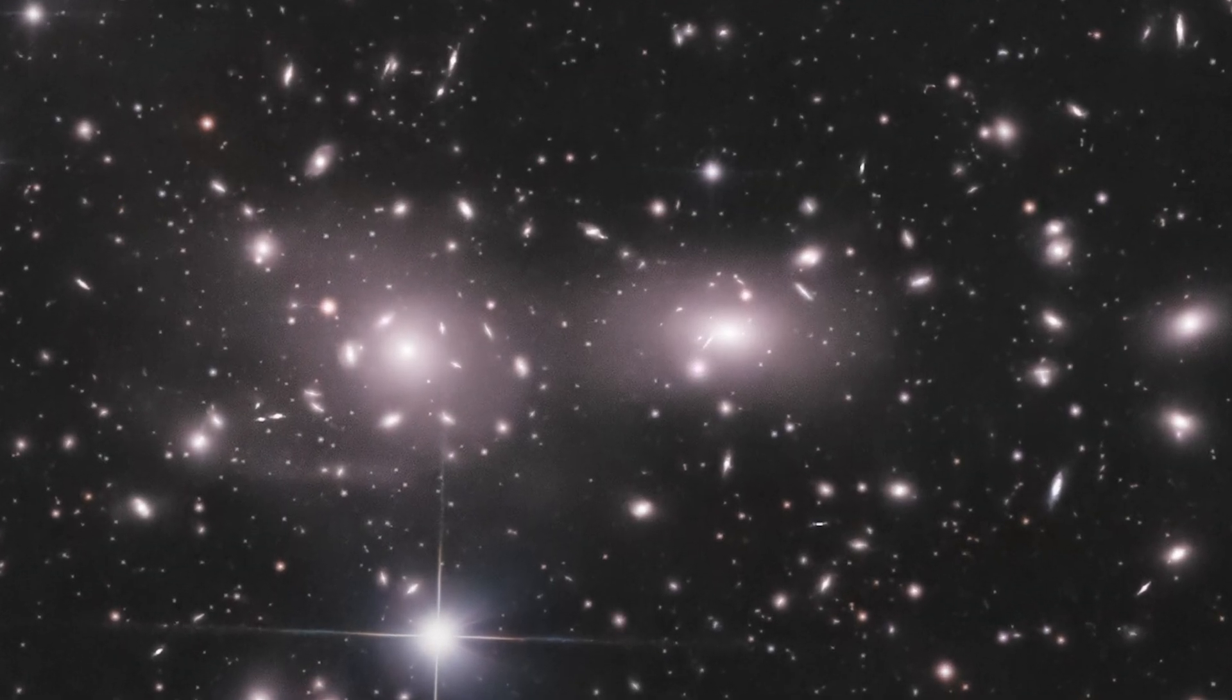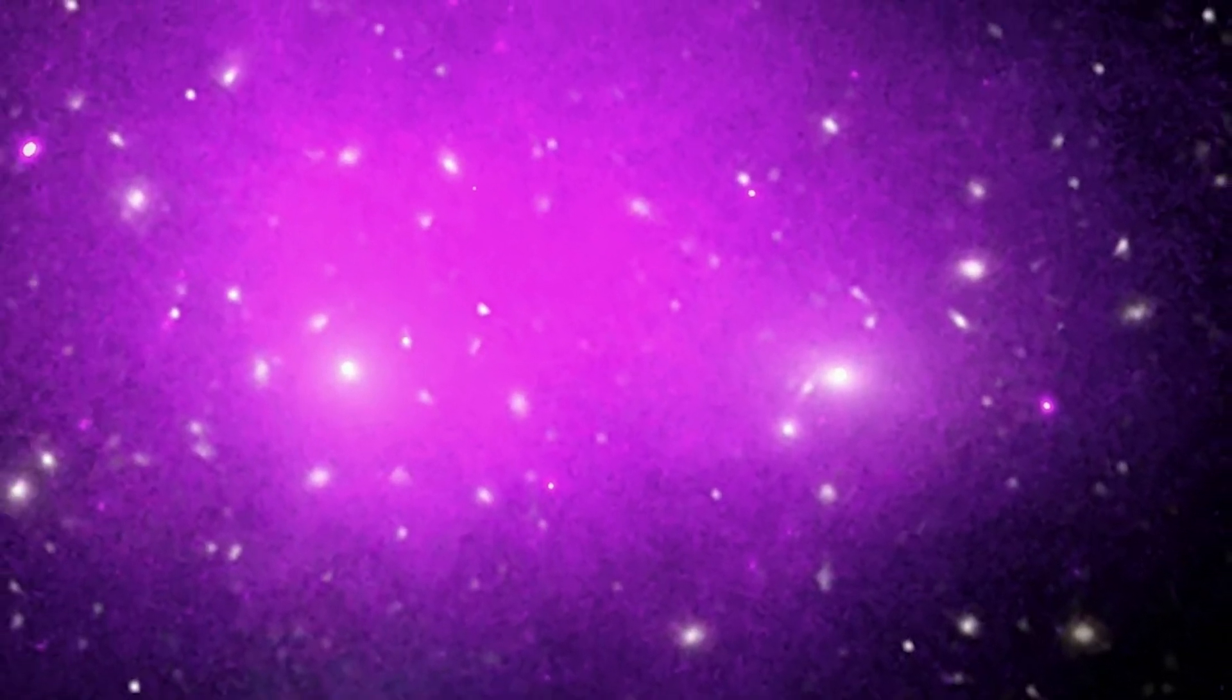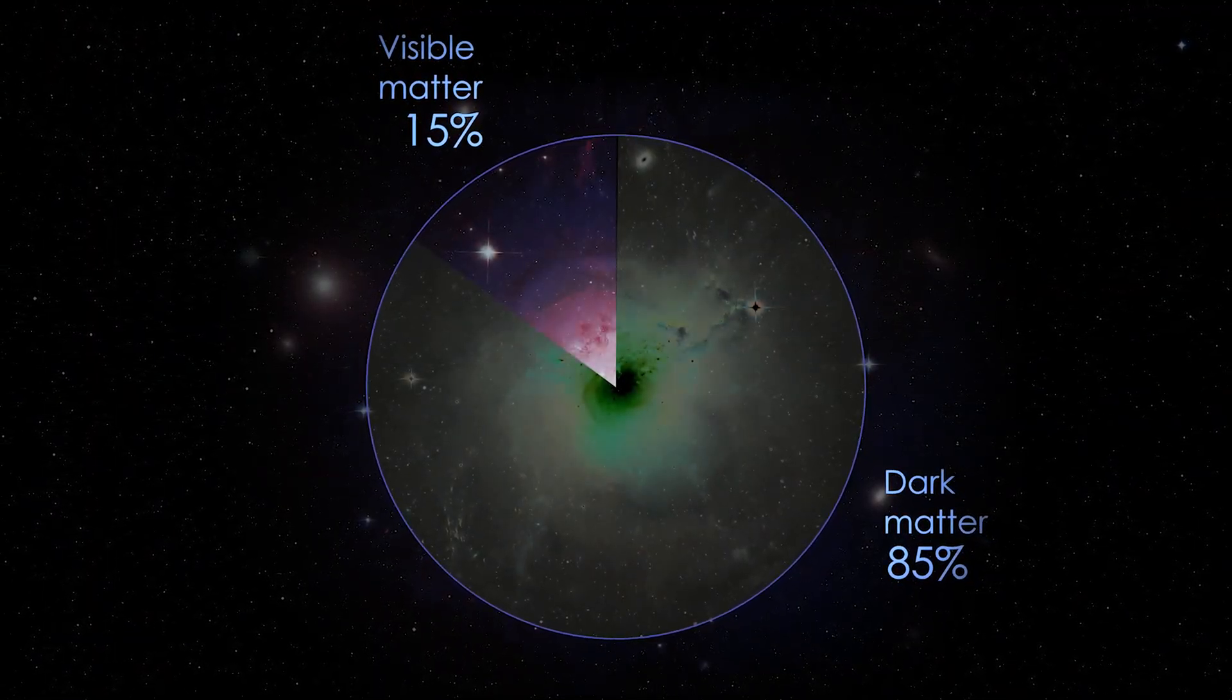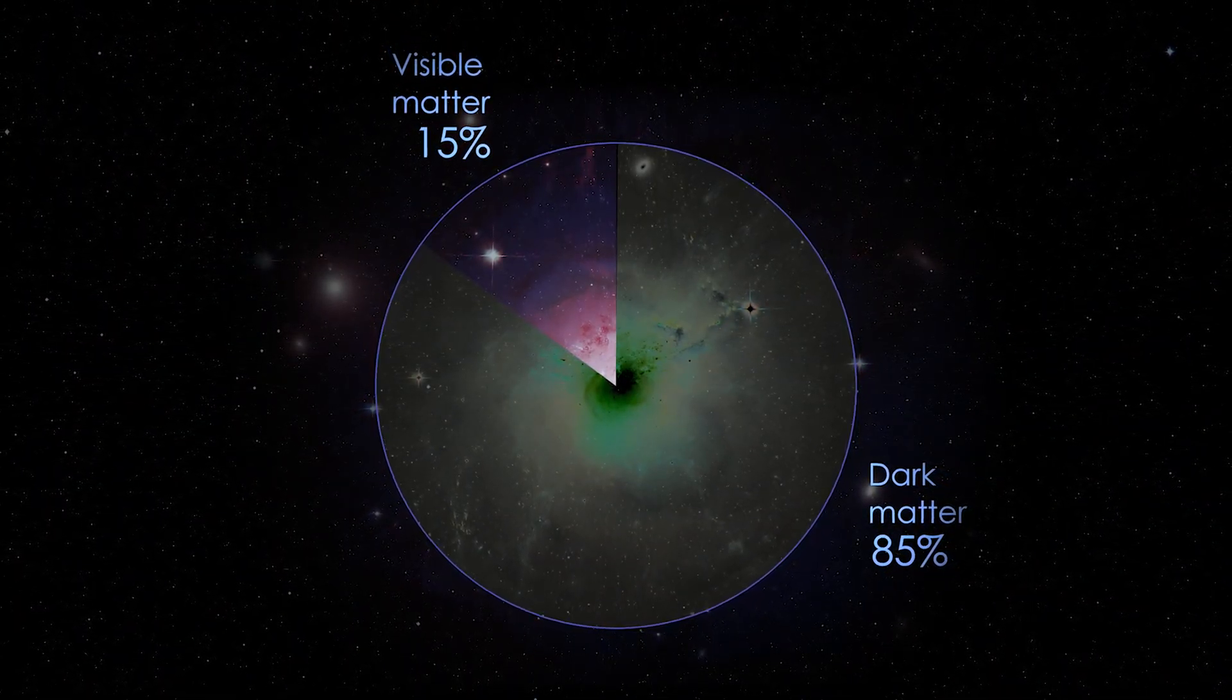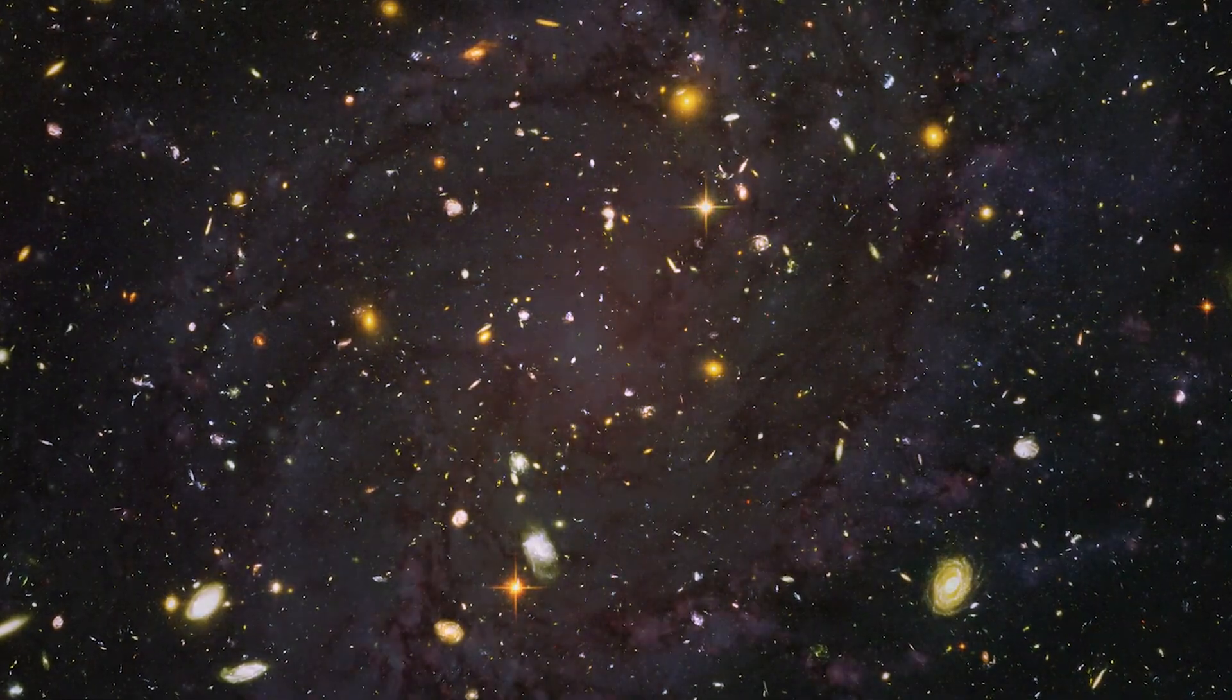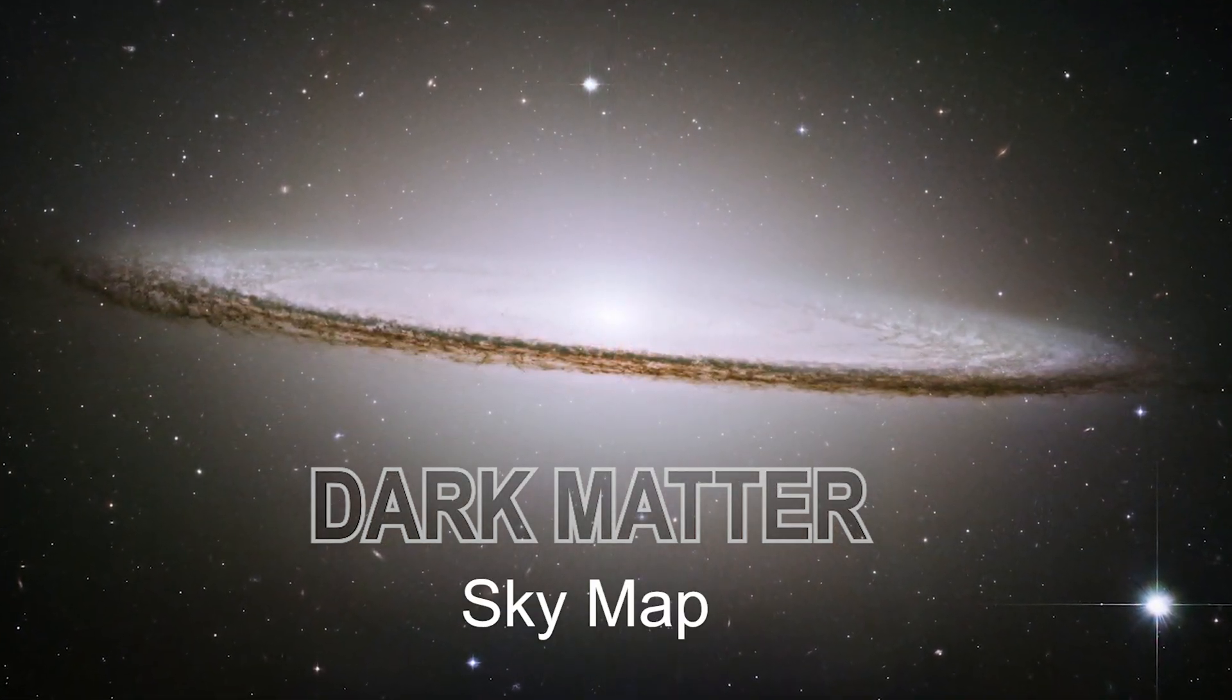Dragonfly 44 is part of the coma cluster. Surprisingly, the visible mass of the whole cluster is only 10% of the total mass. In fact, according to scientists, only 15% mass of the whole universe is visible and the remaining 85% is invisible. This invisible mass is called dark matter. Today in this video, we will be talking about dark matter and its connection with the concept of God. Hello everyone, my name is Aditya and welcome back to my YouTube channel, Sky Map.